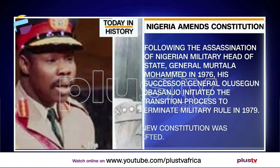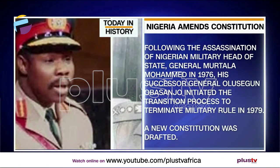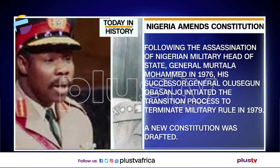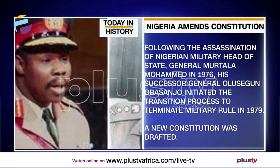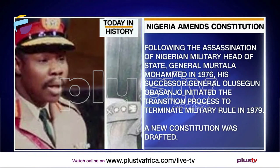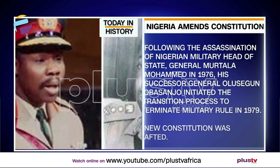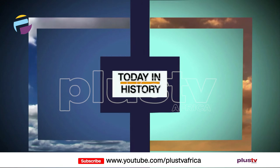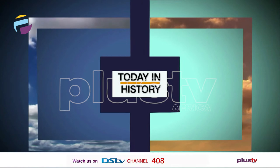Following the assassination of Nigerian military head of state Murtala Mohammed in 1976, his successor Olusegun Obasanjo initiated the transition process to terminate military rule in 1979. A new constitution was drafted, with the Westminster system kicked out. In 1979, five political parties competed in a series of elections in which Alhaji Shehu Shagari of the National Party of Nigeria was elected president.